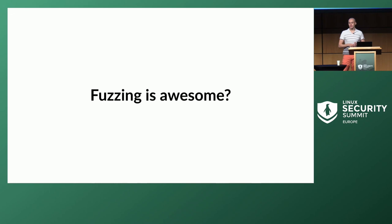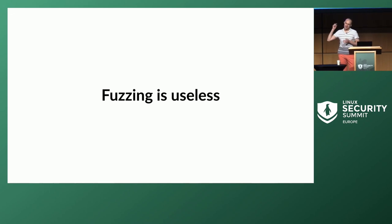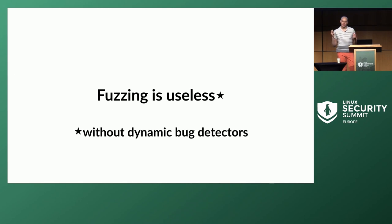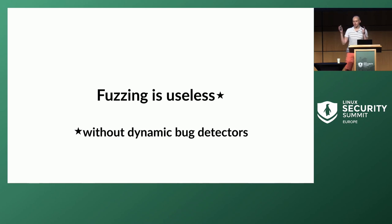Today I want to revise that statement a little bit. Fuzzing is still an awesome tool, but fuzzing is useless just by itself. One of the things that makes fuzzing work is the dynamic bug detectors used together with the fuzzer. The fuzzer is able to trigger different code paths within the kernel, and then the bug detectors detect the bugs.